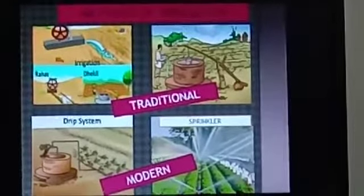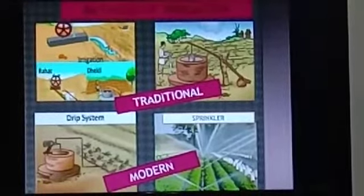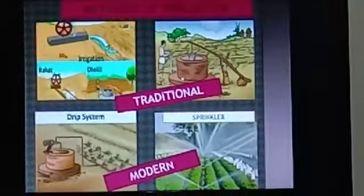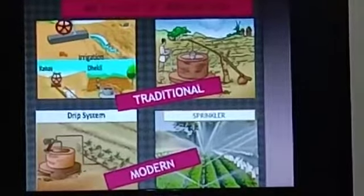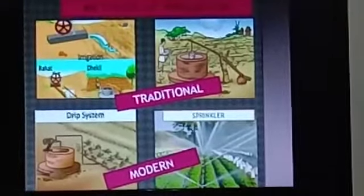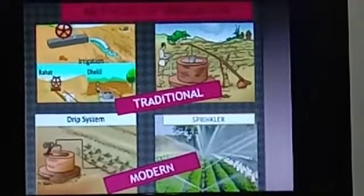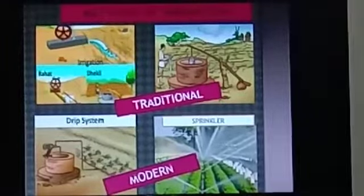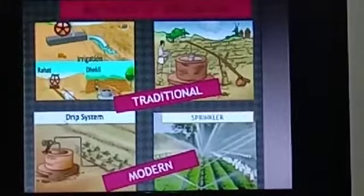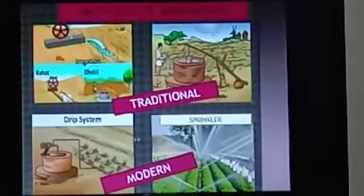In this slide, you can see both traditional and modern methods of irrigation. Traditional methods use a large amount of water, and there is a lot of wastage, so it is not very proper to use traditional methods nowadays. Modern methods use less water and can irrigate a large area of the field. Drip irrigation and sprinkler irrigation are modern methods that conserve water and can be used in water-scarce areas.